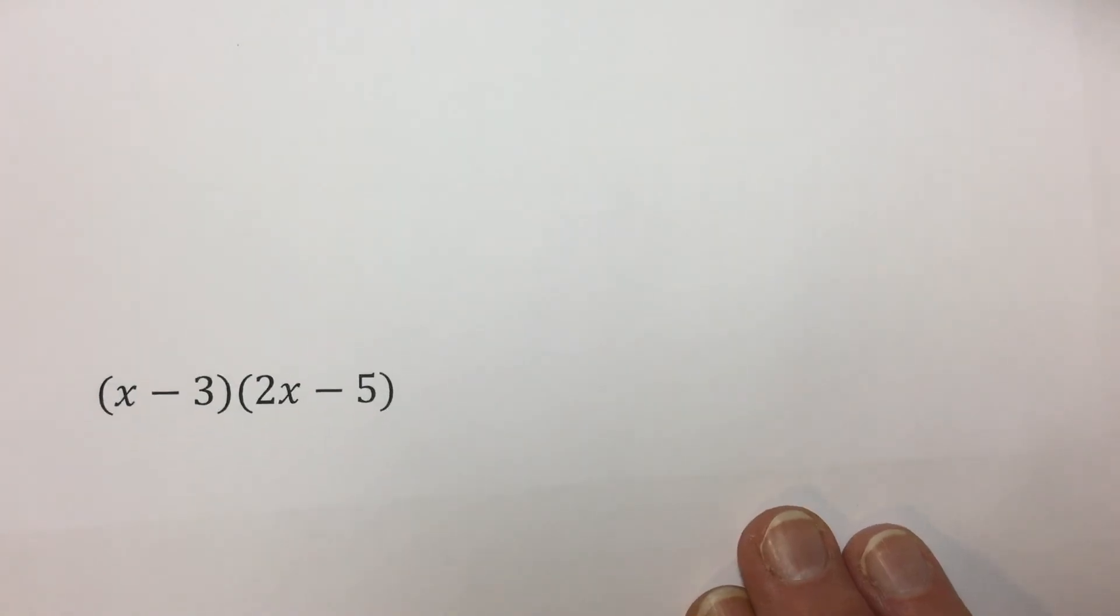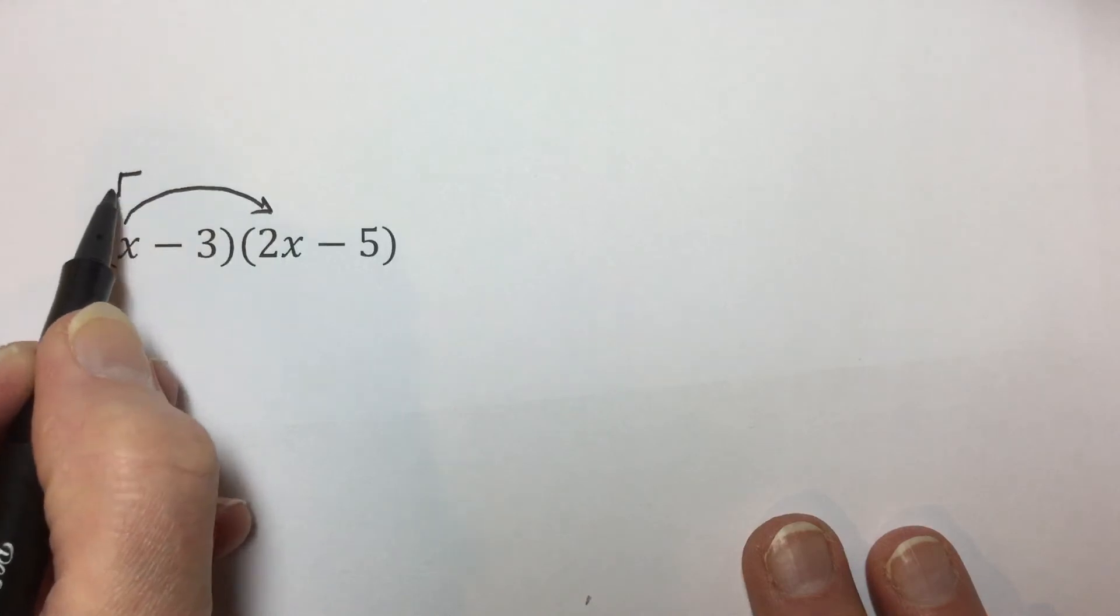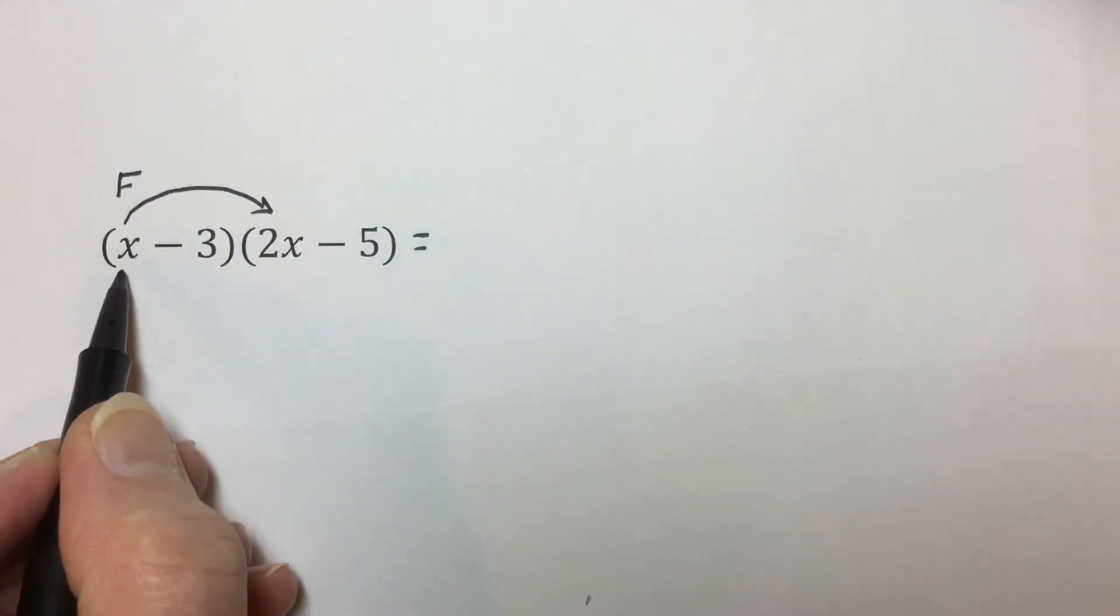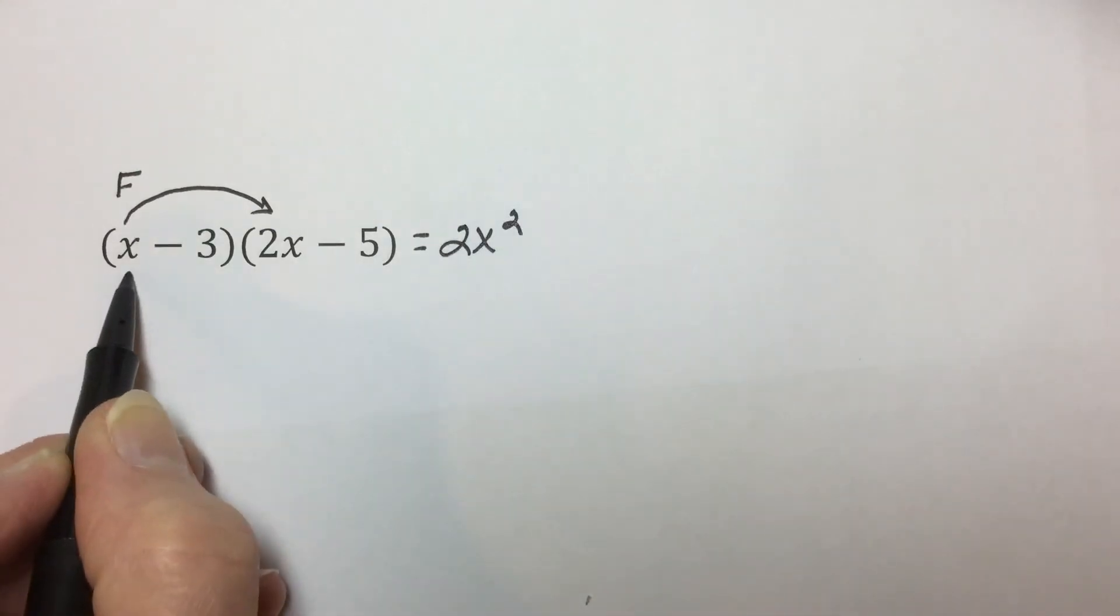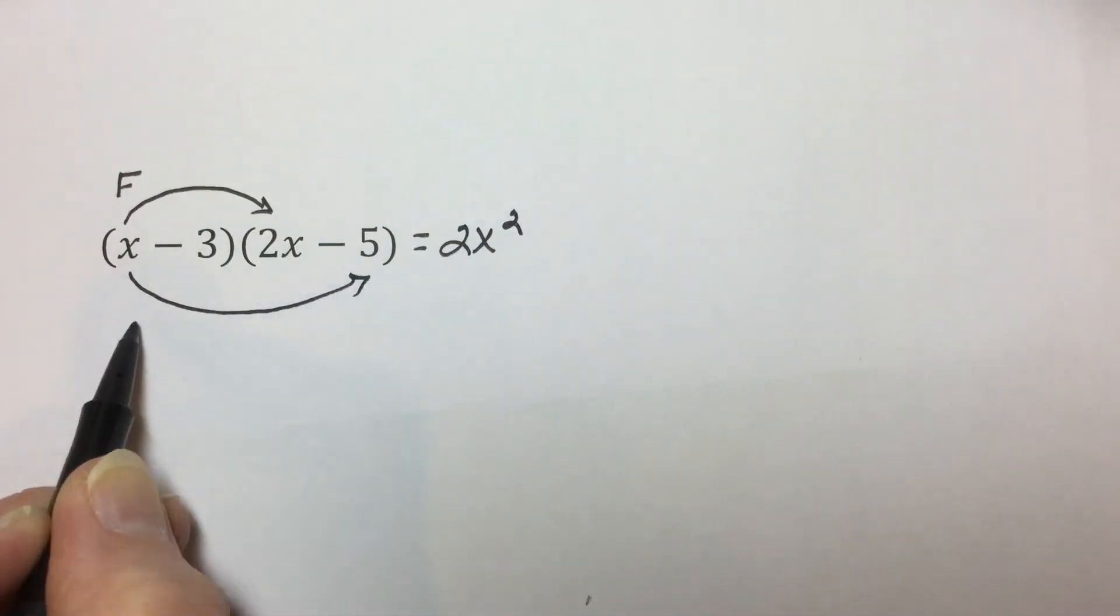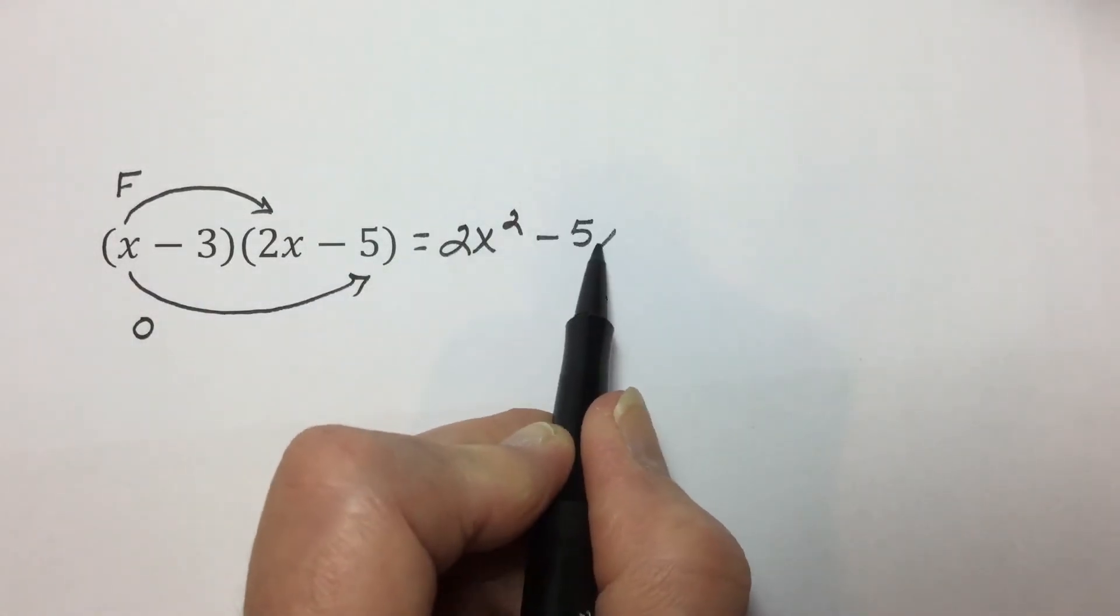One more example using the FOIL method. F for the first terms multiplied together, X times 2X is 2X to the second power. O for outer terms multiplied together, X times negative 5 is negative 5X.